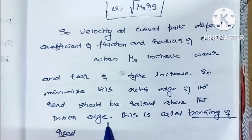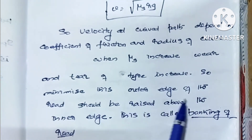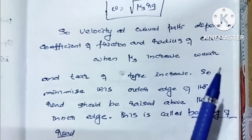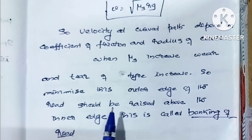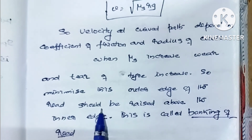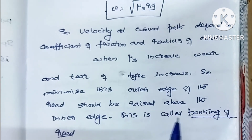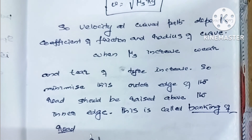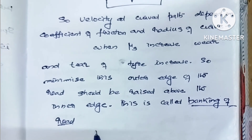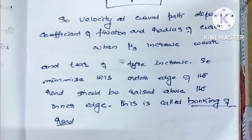When mu-s increases — the coefficient of static friction increases — wear and tear of the tyre increases. So to minimize this, the outer edge of the road should be raised above the inner edge of the road. That's the end of the video.